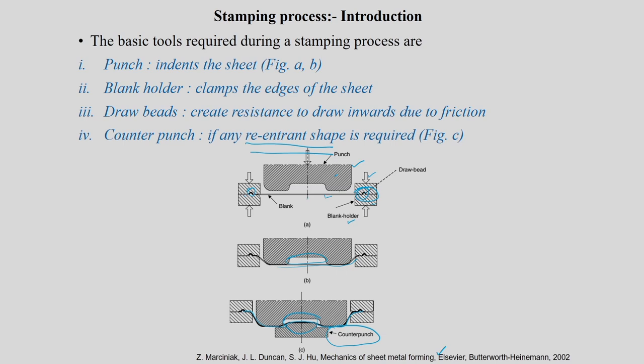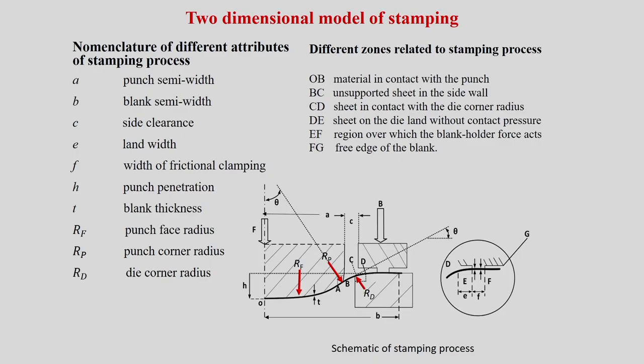If we want to analyze this stamping process and calculate certain important quality parameters — such as how much strain the sheet can withstand at a particular location, how much thickness remains, and what the principal stresses sigma 1 and sigma 2 are — all these can be calculated from what we have studied before. We are now going to consider a two-dimensional stamping model, and a typical schematic of the 2D stamping process is shown in this figure.